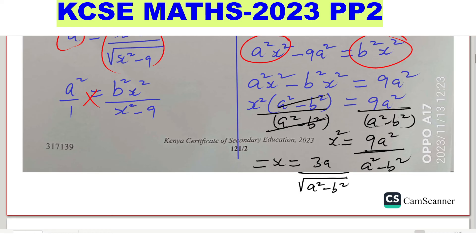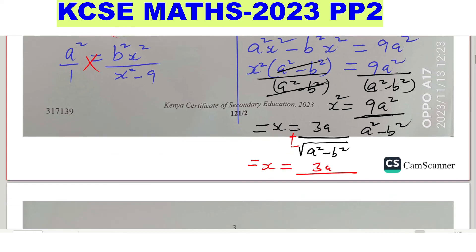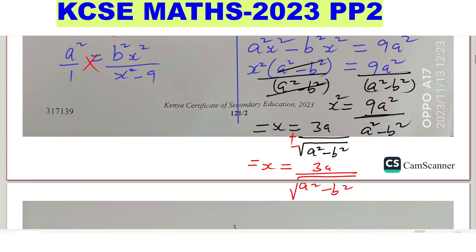Don't forget: when you take the square root, you get either a positive or negative result. So therefore, x equals plus or minus 3a divided by the square root of a squared minus b squared.